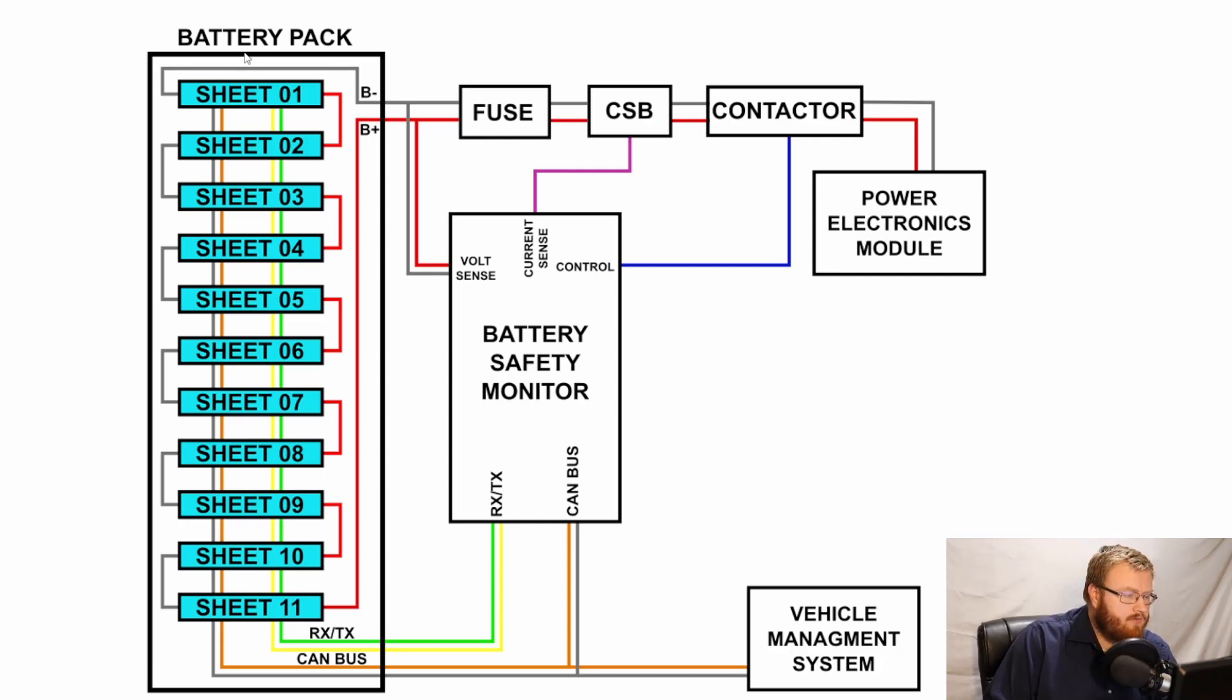Now of course we have our battery pack here like we discussed in last video. We have our 11 sheets all connected together with CAN bus and all connected together with your RX and TX. All 11 sheets are series together to make up a 400 volt battery pack.